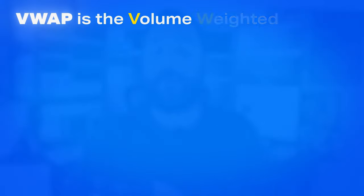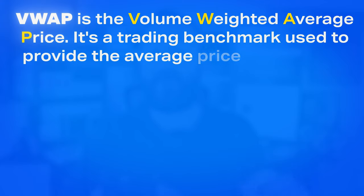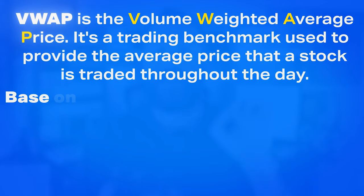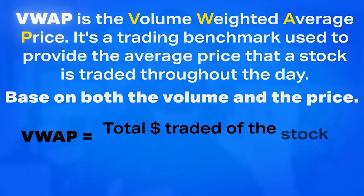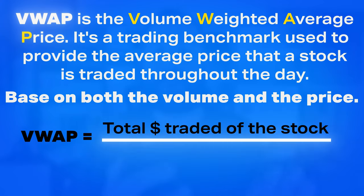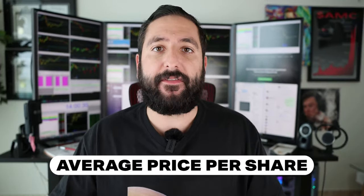Using the VWAP is a very good indicator to tell me who is stuck on the trade. And once you know which side of the trade is stuck, you can make a plan and capitalize. VWAP is the volume weighted average price — a trading benchmark used to provide the average price that a stock is traded throughout the day, based on both volume and price. It's calculated by taking the total dollar amount traded for a stock and dividing it by the total volume traded over the day.